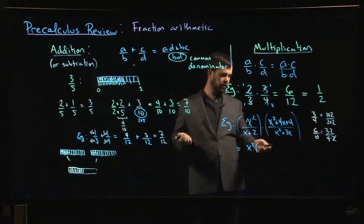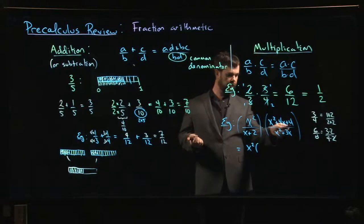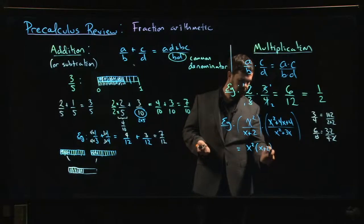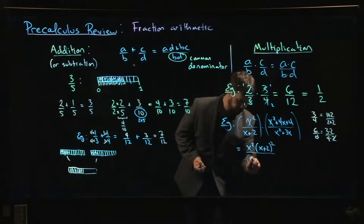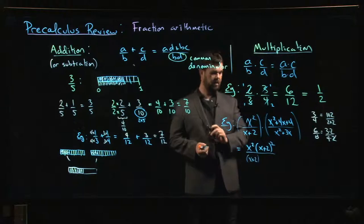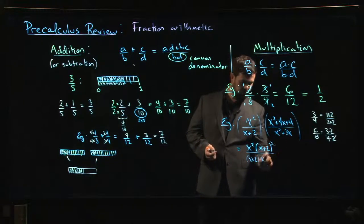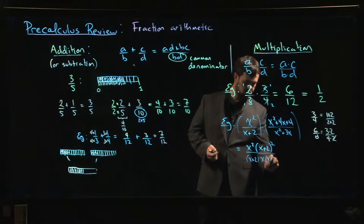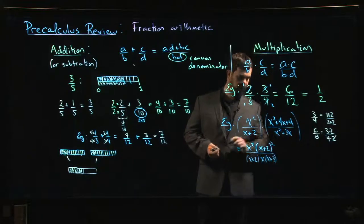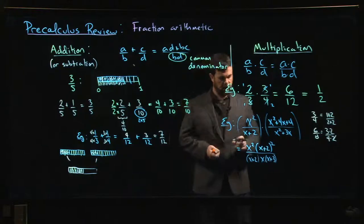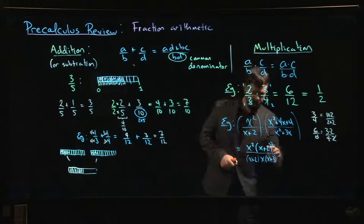So maybe what we do is combine them if you like, but rather than multiplying through, think about factoring. This is the square of x plus 2 on the top. On the bottom, I have x plus 2, and then I have x times x plus 3 when I factor that.